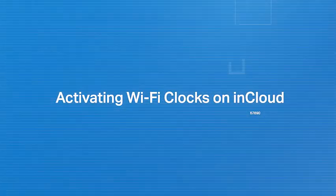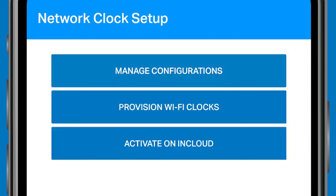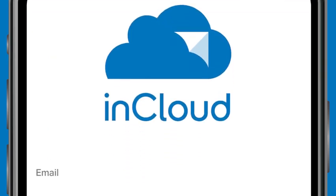For InCloud subscribers, ensure that all your Wi-Fi clocks are provisioned first. Then tap the back arrow to return to the home screen. If your clocks were pre-provisioned by American Time, or if you've just self-provisioned your clocks, you're ready to add them to InCloud. Tap the Activate on InCloud button and enter your login credentials.